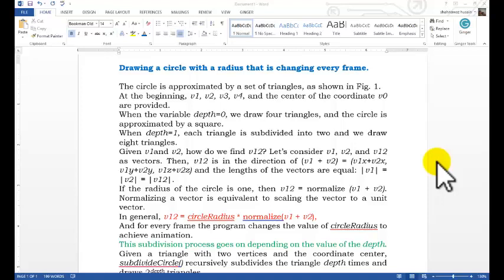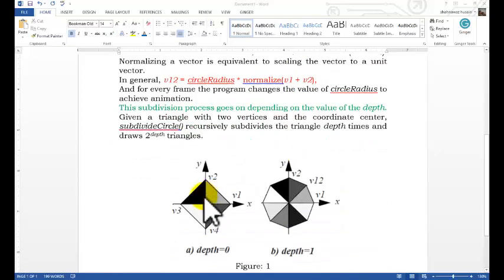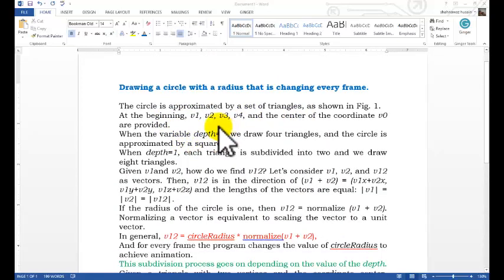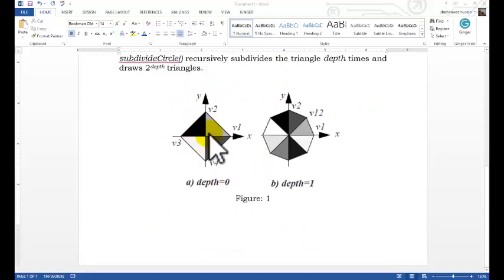The circle is the demonstration before starting the source code. The circle what we are going to draw is approximated by a set of triangles. We are going to draw the circle with the help of the triangle. The triangle is given in the first one. We are having at the initial time v1, v2, v3, v4, four coordinates for the triangle. There are four points actually at the center of the coordinate v0. Actually this is the center, we are having four triangles.